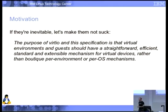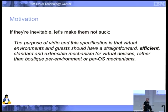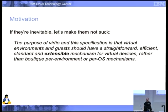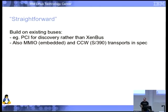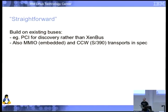So let's make them not suck. Anything in italics is actually a quote from the standard document itself. What we want is something that is straightforward, obviously efficient, standard, and extensible. Straightforward means, for example, that a device should build on existing buses — it should generally be PCI. Everyone expects PCI devices in their machine, so why not present it as a PCI device? It already solved problems like how to find what devices are and tell them apart — there's a very thick standard on that. Let's use it and not create some boutique hypervisor bus.